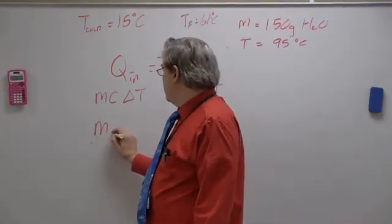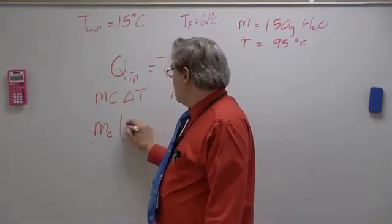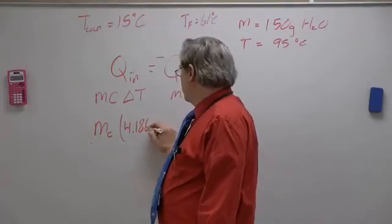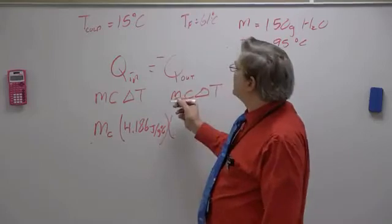So I have m for the cold water. And that's our unknown times 4.186 joules per gram degree Celsius. And then I have delta t.